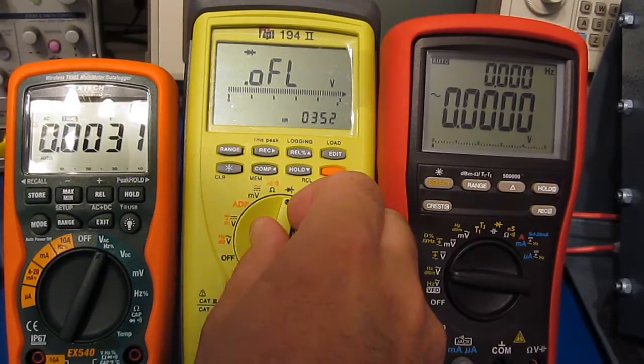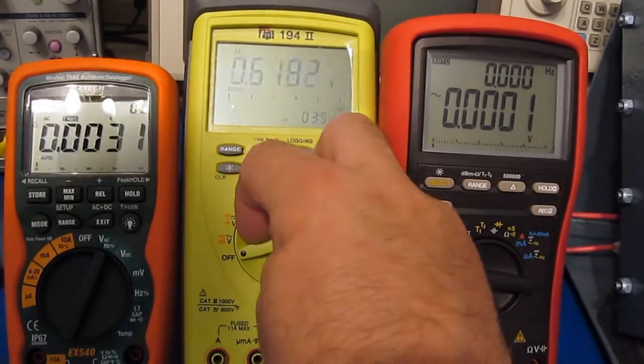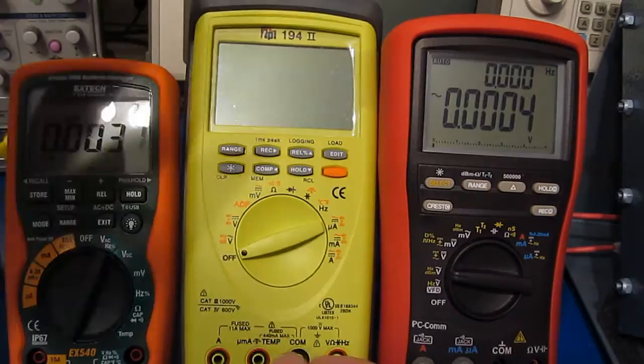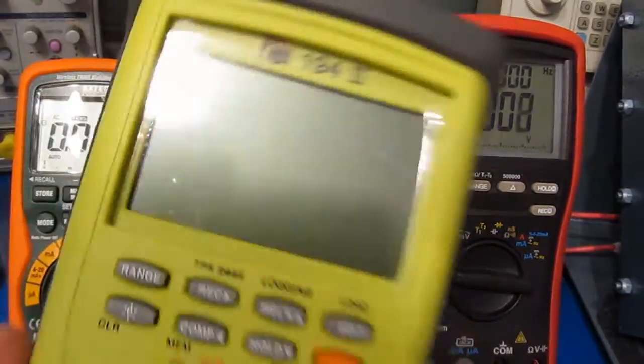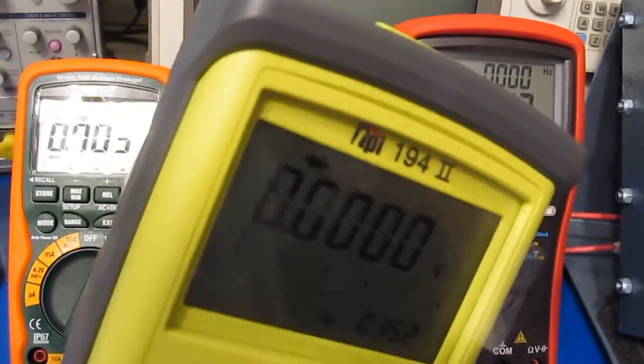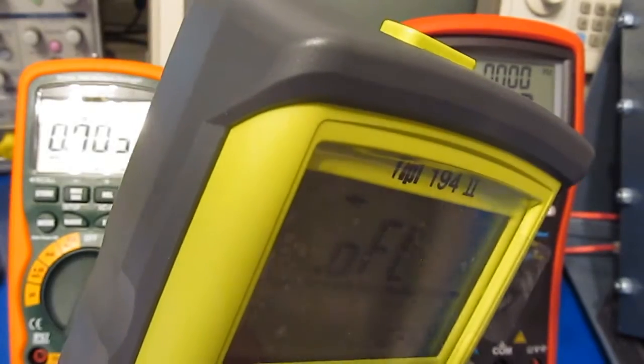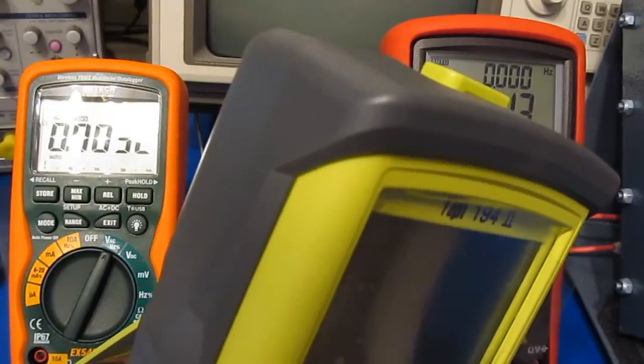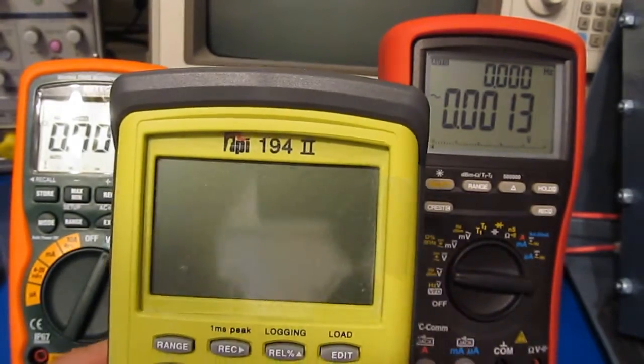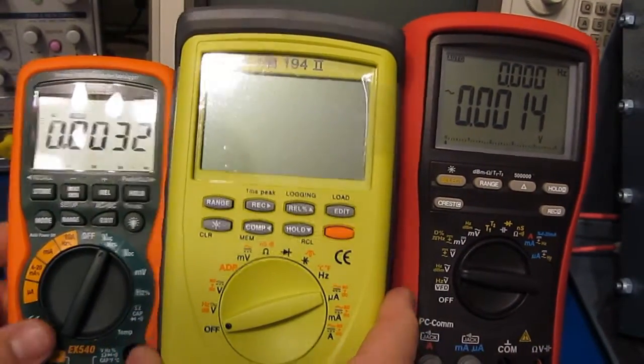Another thing I don't like about it is when you turn it off. I'll bring the meter up closer so you can hear the beeper. You can hear how the beeper kind of fades out as you turn it off. I can imagine if that beeper were actually louder, that would be quite annoying.